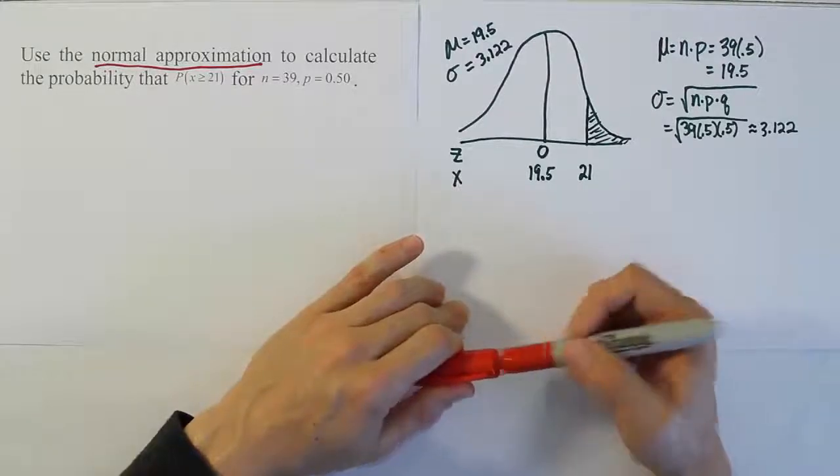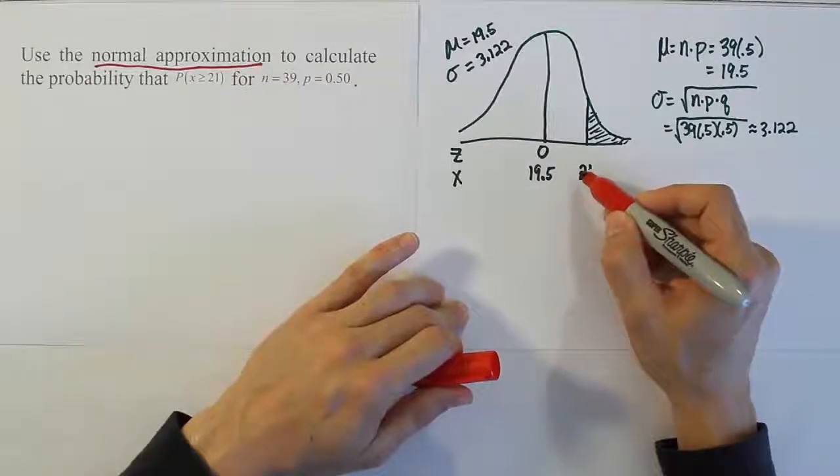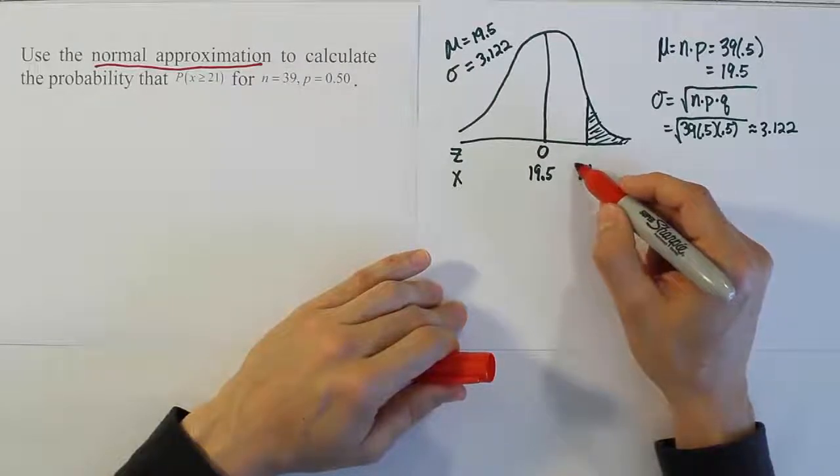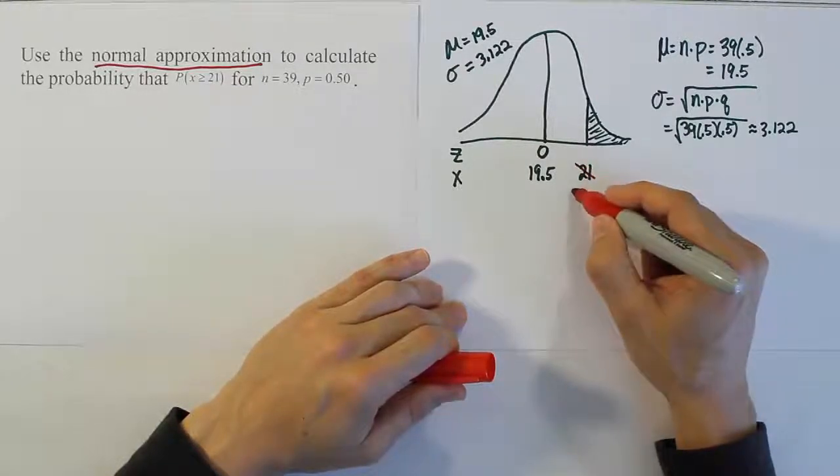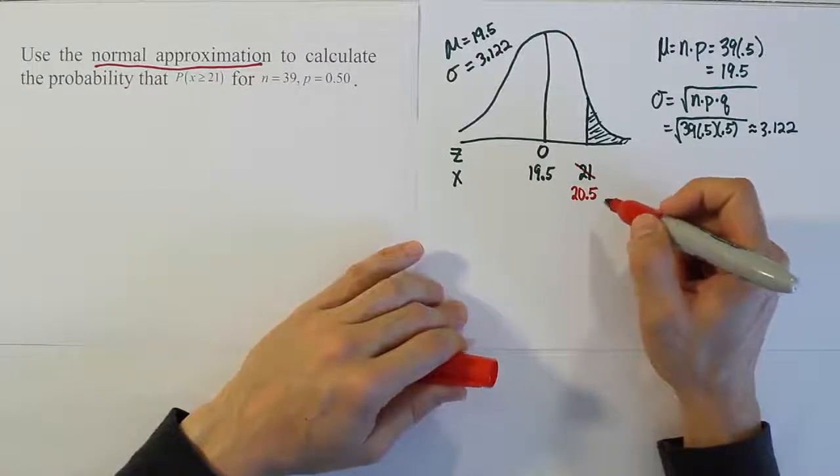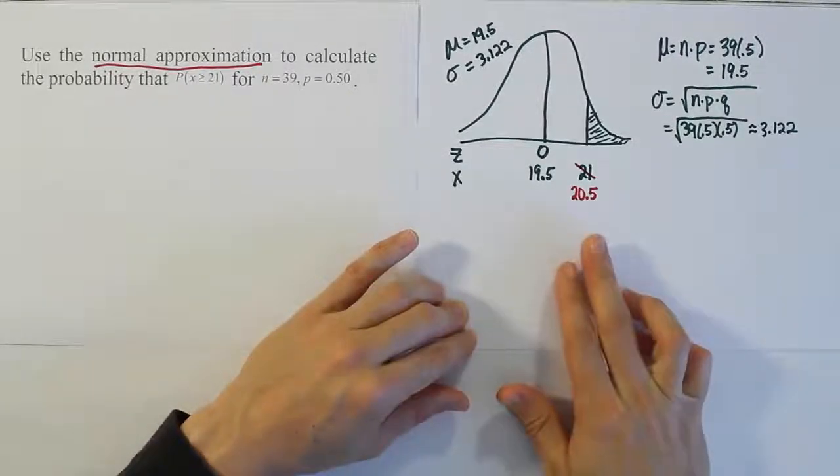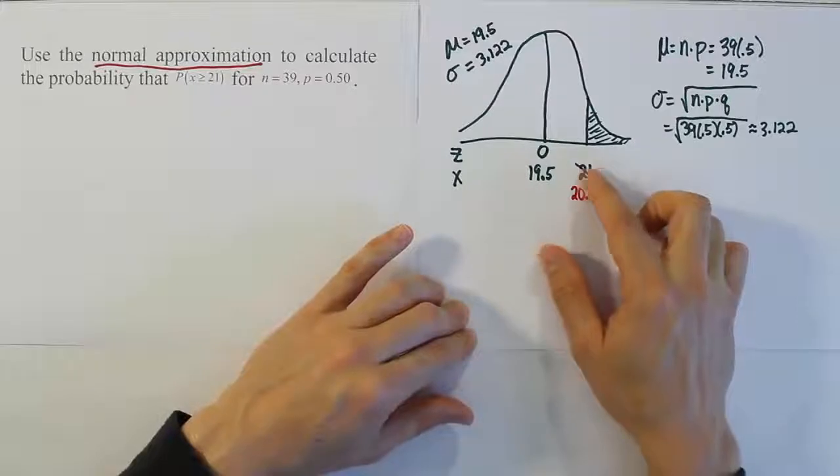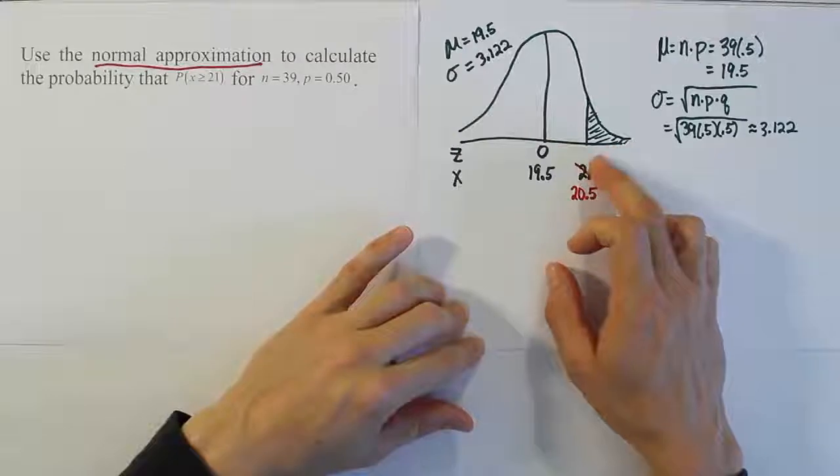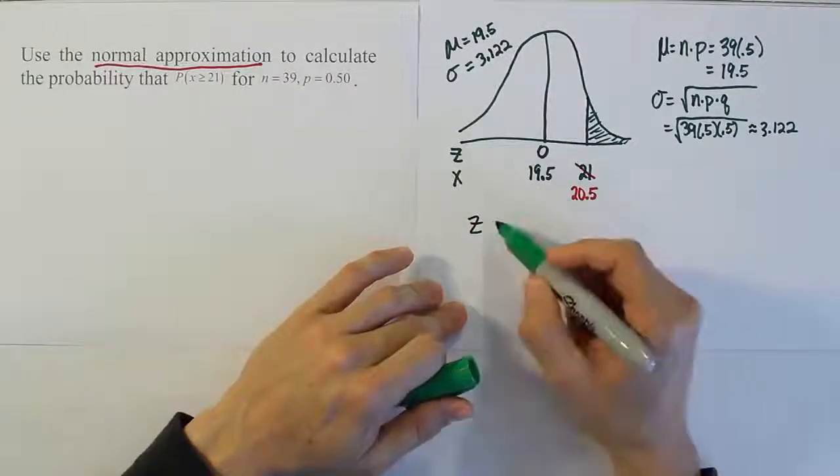Remember what you want to do with continuity correction is, if you're sweeping to the right here to accumulate all the area to the right, we're going to start just a little before 21. We're going to take 0.5 away from it. So we're not going to use 21, but rather we will use the number 20.5. So just a little before 21, right before 21 is 20.5 on the number line. We'll use that number. We'll take 0.5 from 21 and end up with 20.5, and we use that number to convert into a z-score. And that's the number we'll actually look up on our chart.